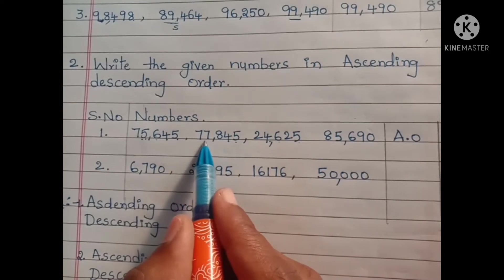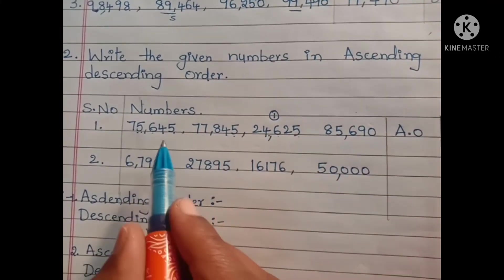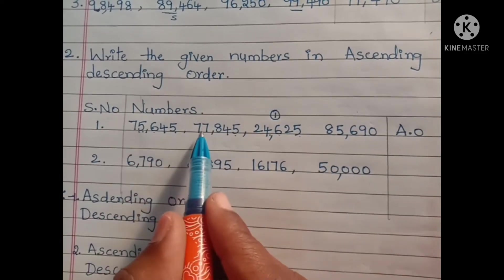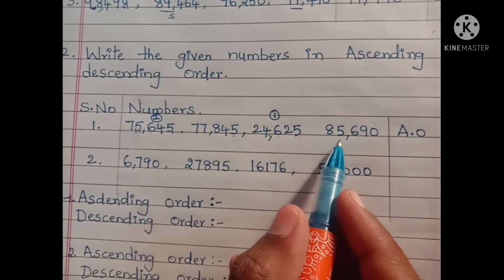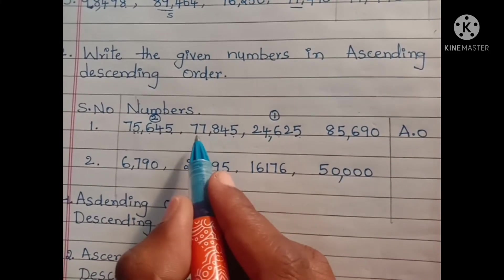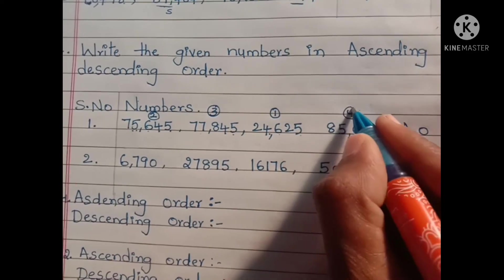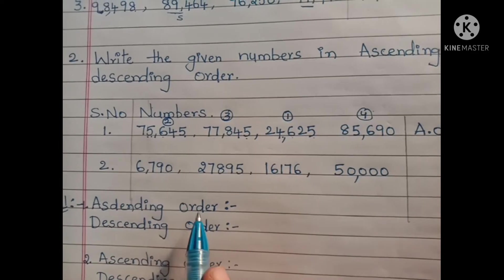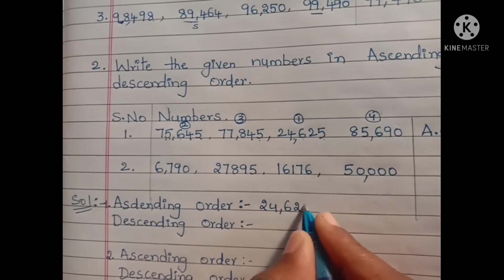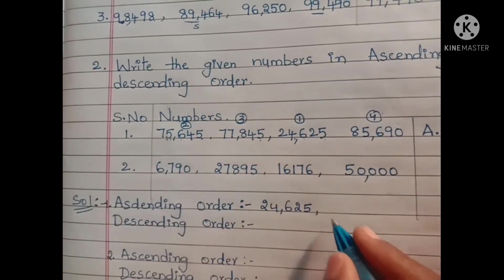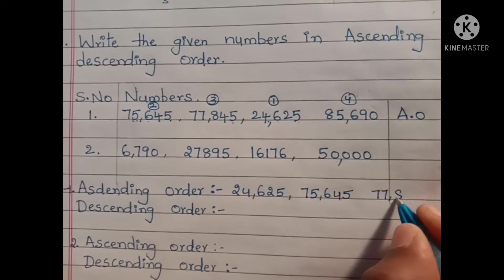Among 75, 77, 24, and 85, the first smallest number is 24,000. Next, among the remaining numbers, comparing 75,000 and 85,000, the smaller is 75,000. Then the remaining are 77,000 and 85,000. So for ascending order, the smallest number first: 24,625, then 75,645, then 77,845.